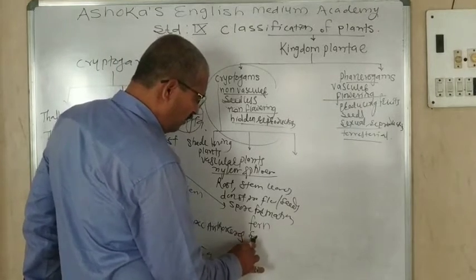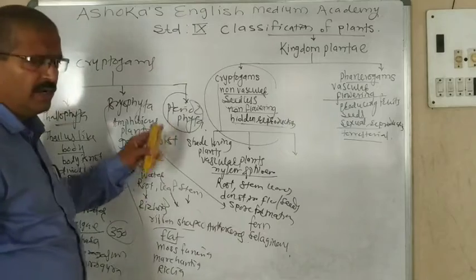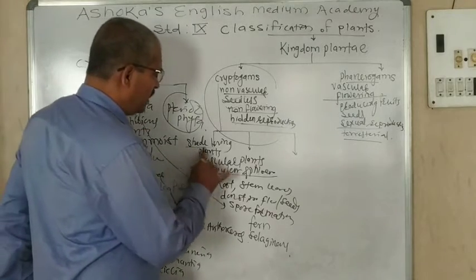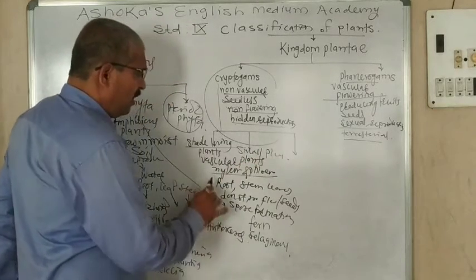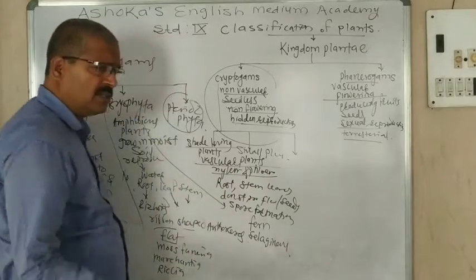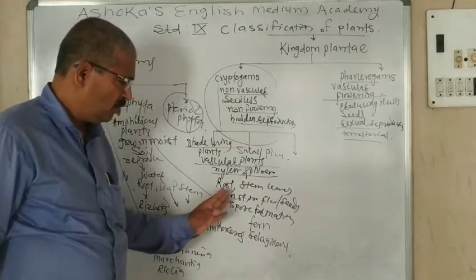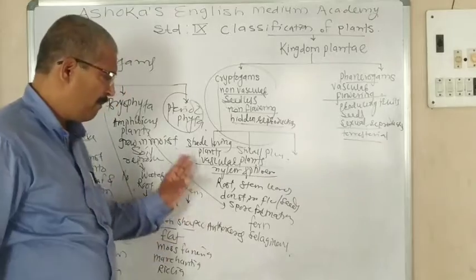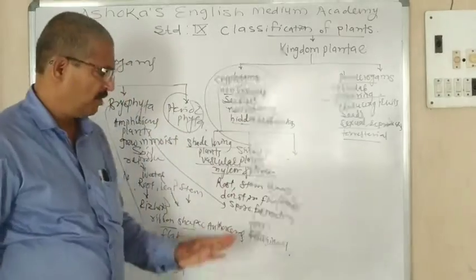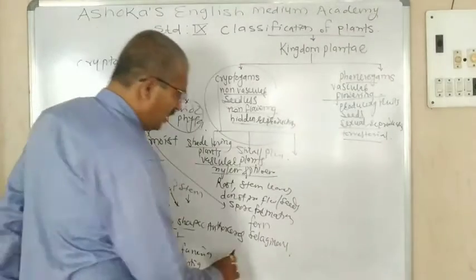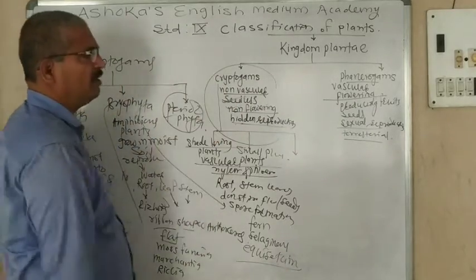The example of Pteridophyta is fern, Selaginella, and Equisetum. Pteridophyta are shade-loving small plants. Vascular conducting tissues are present. The body is differentiated into roots, stem, and leaves. They do not produce flowers or seeds, but reproduction takes place by spore formation. Examples are fern, Selaginella, and Equisetum.